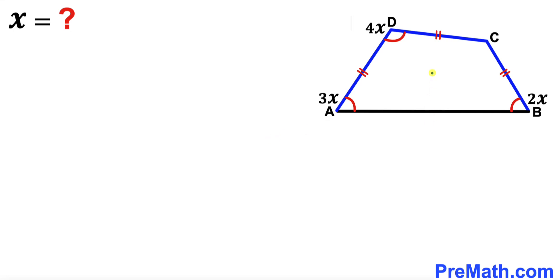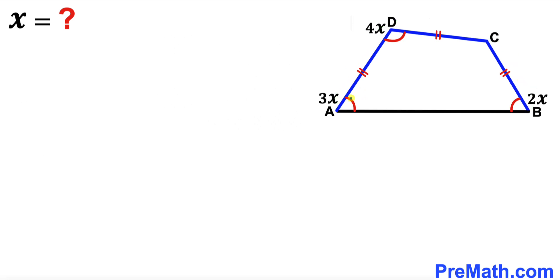Welcome to pre-math. In this video we have quadrilateral ABCD such that side length AD equals side length CD, and side length CD equals BC. Moreover, angle DAB is 3x, angle ADC is 4x, and angle ABC is 2x. Our task is to find the value of angle x.